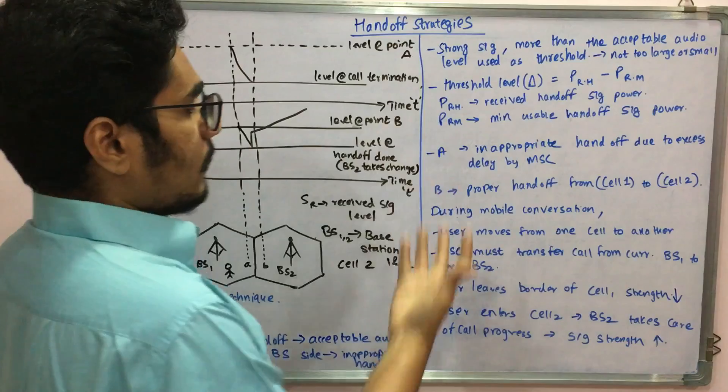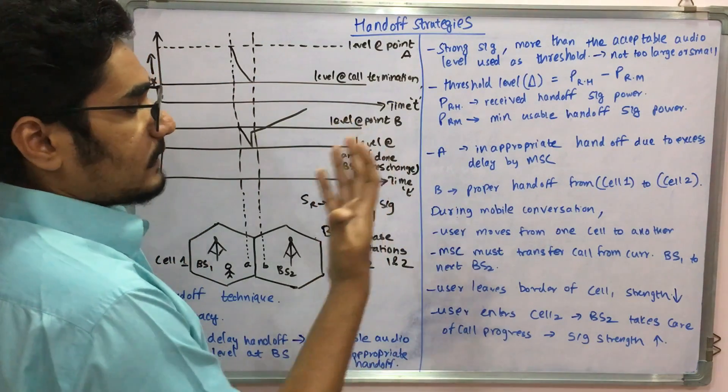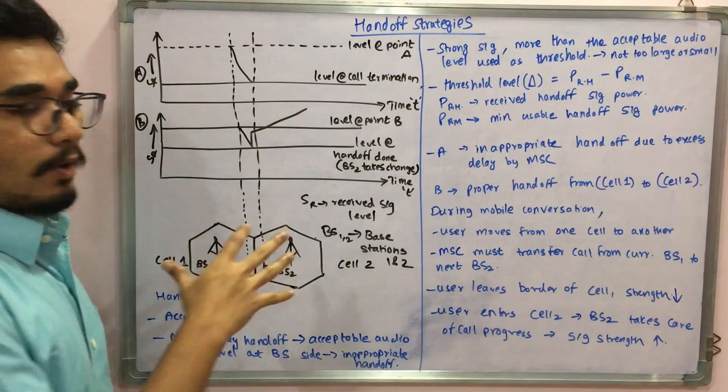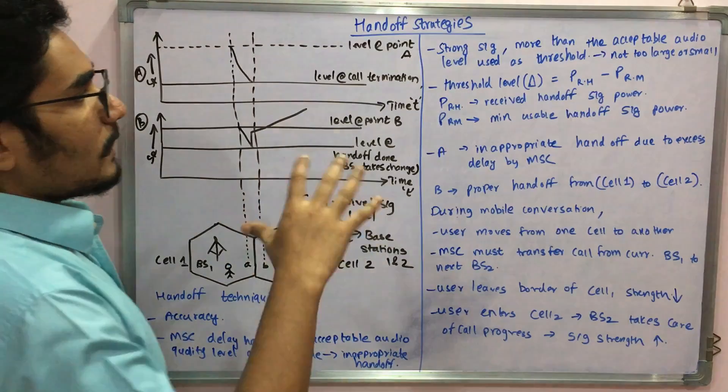Here what you have is A: an inappropriate handoff due to excess delay by the MSC, and B: where you have the proper handoff from cell 1 to cell 2 when you moved.